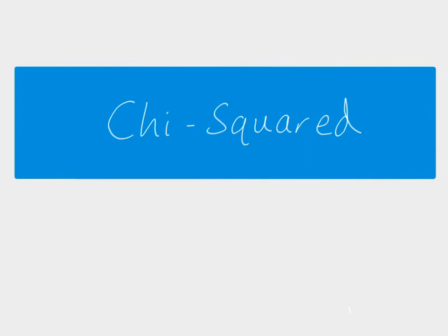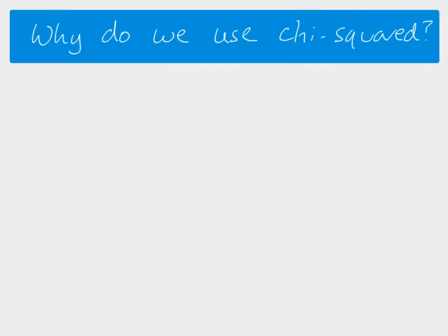Hi everybody. In this video we're going to look at chi-squared, which is a statistical test. First of all, we want to know why we would use chi-squared. We use statistics because it's very hard for us as humans to decide if something is due to chance or if there's a pattern — a reason for it. So we use statistics as a way to make that decision about whether something is happening by chance or whether there's maybe a scientific reason behind the results that we see.